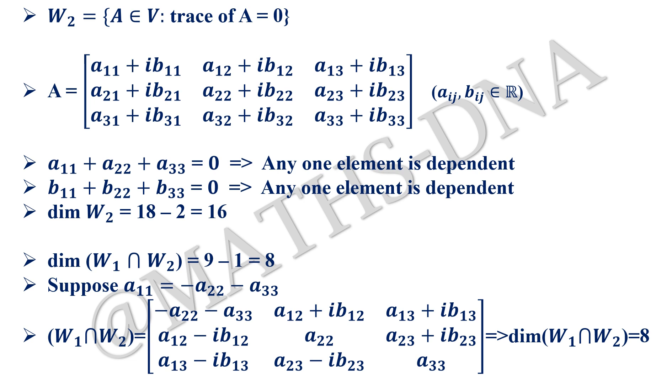So the one entry that was independent in W₁, that was a₁₁, is now dependent in their intersection as -a₂₂ - a₃₃. Pause the video over here, note it down carefully and understand these steps properly.